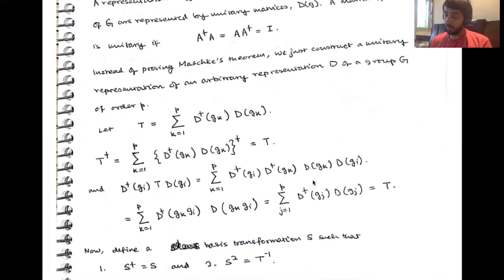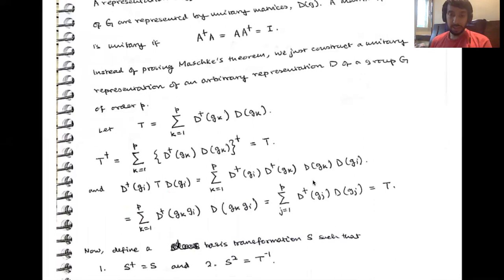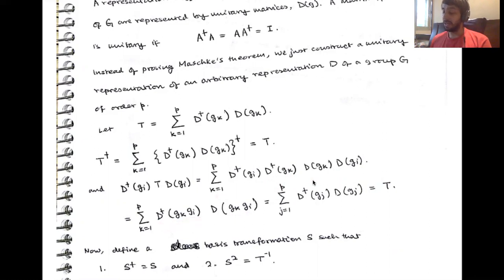It's also simple to see that D-dagger T D also equals T. To show this: there is a sum over k, and D(G_k) D(G_i) equals D of G_k·G_i. The daggers work similarly, giving D-dagger(G_k·G_i) and D(G_k·G_i). Now G_k·G_i has to equal some G_j, and there's a sum over i from 1 to P, so you get D-dagger(G_j) D(G_j), which again equals T.